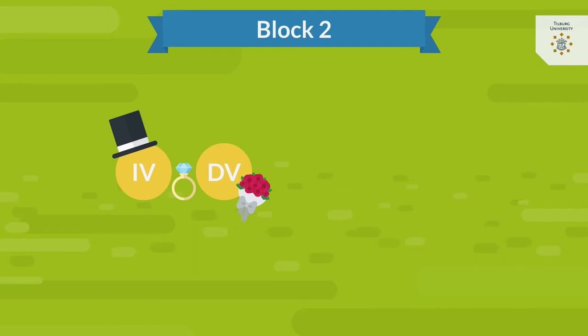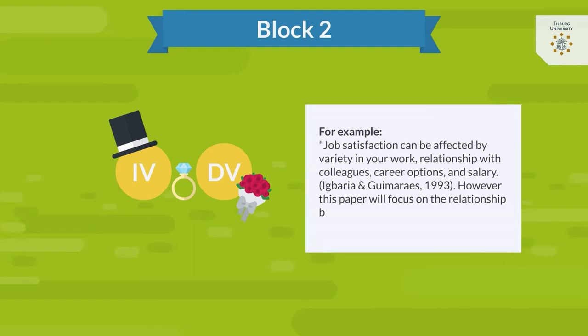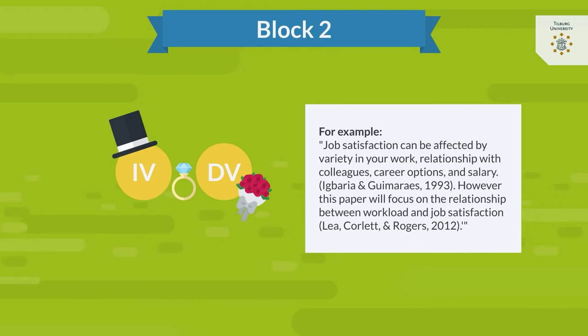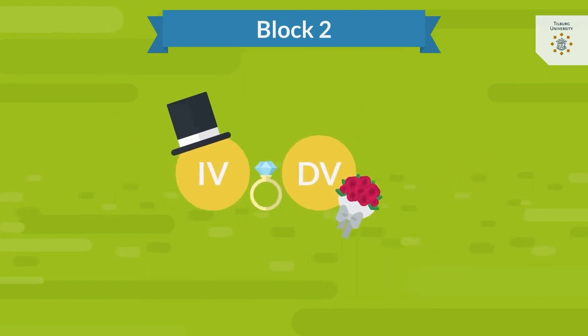You can also do this in a more elaborated way by writing 'job satisfaction can be affected by variety in your work, relationship with colleagues, career options, and salary. However, this paper will focus on the relationship between workload and job satisfaction.' Again, do not forget to support whatever you write with credible sources.